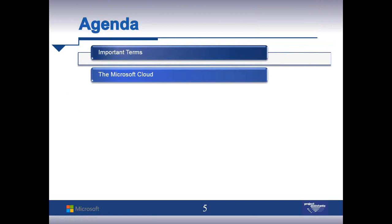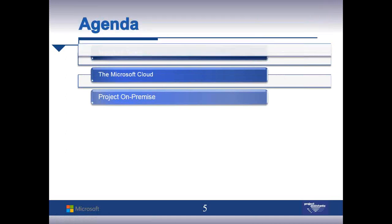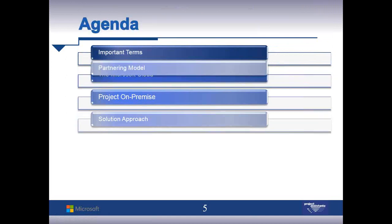We'll break the terminology down through the Microsoft Cloud terminology, and when we do that, we're also going to do a demonstration of the different capabilities. You'll see different ways these components are licensed, and we'll show you some of the differences between the components — Project on-premise, traditional Microsoft Project, and Project Server.